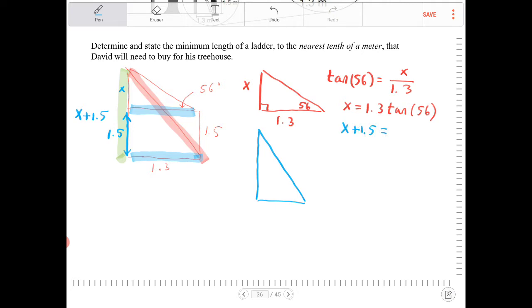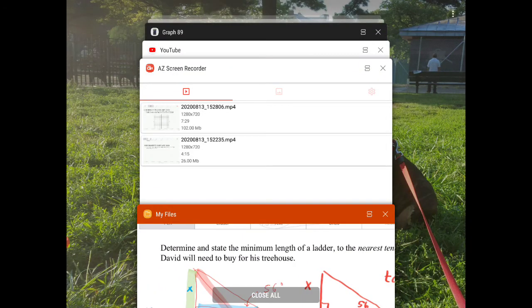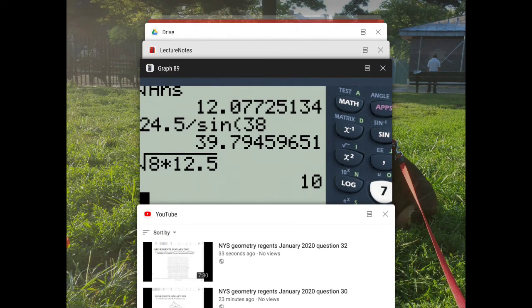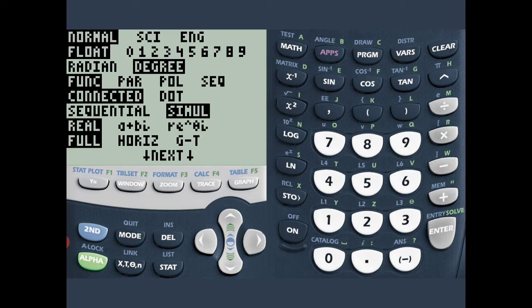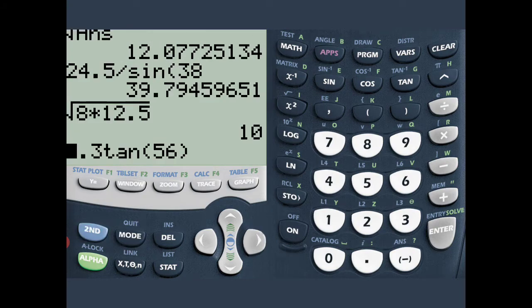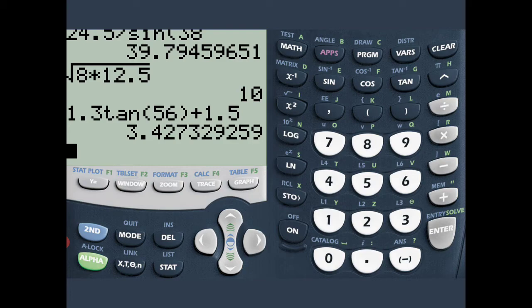Let's get our calculator. So that's 1.3 tangent of 56. And make sure your calculator setting is in degree, by the way. And then plus 1.5. So that would be 3.427.